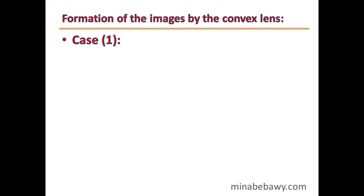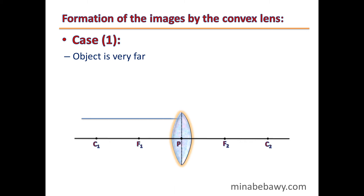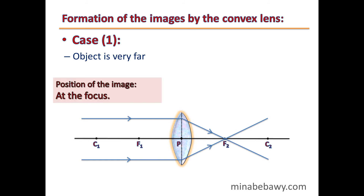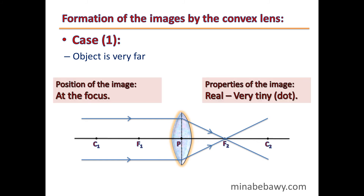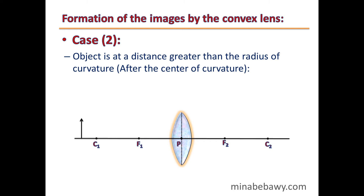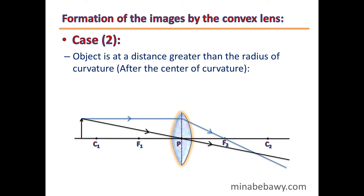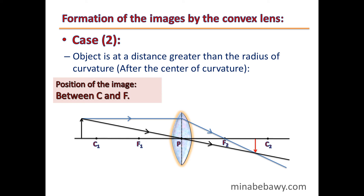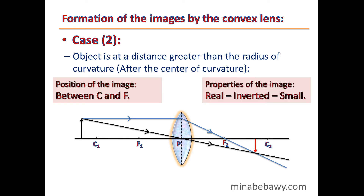Formation of images by a convex lens: Case 1 — the object is very far away, so light rays coming from it are parallel to the principal axis. They refract passing through the focus, so the image is formed at the focus. The image is real and very tiny. Case 2 — the object is at a distance greater than the radius of curvature, or beyond the center of curvature. The image is formed between C and F. The image is real, inverted, and small.